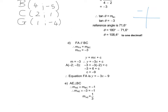Remember, we do not enter the negative when working out the reference angle, but we do know that tan theta is negative in the second quadrant to give an obtuse angle, and therefore the reference angle of 71.6 is subtracted from 180 to get theta equal to 108.4 degrees.